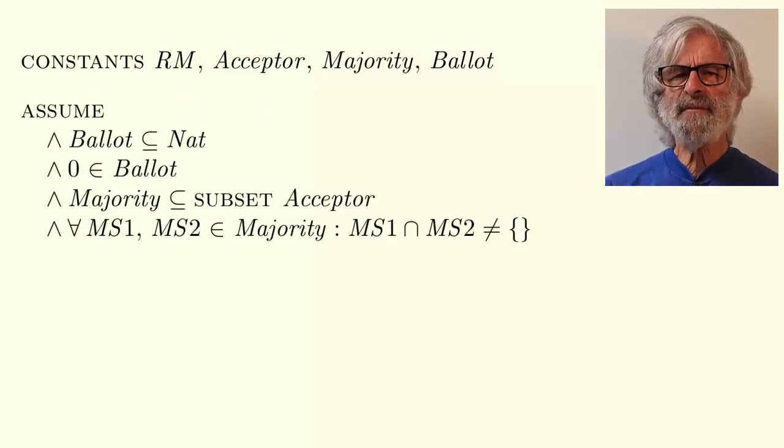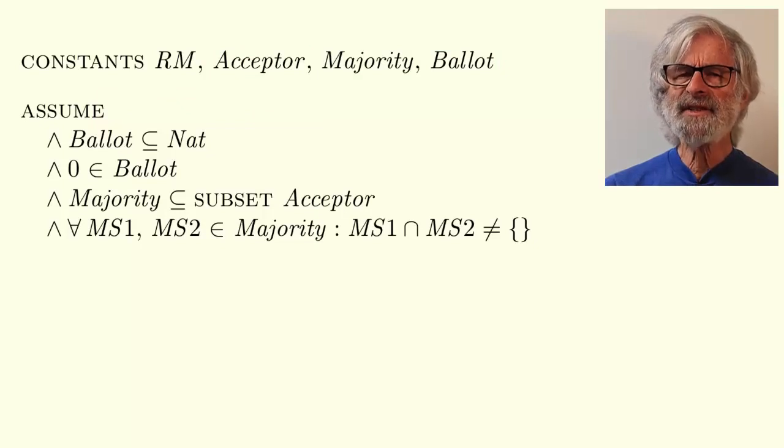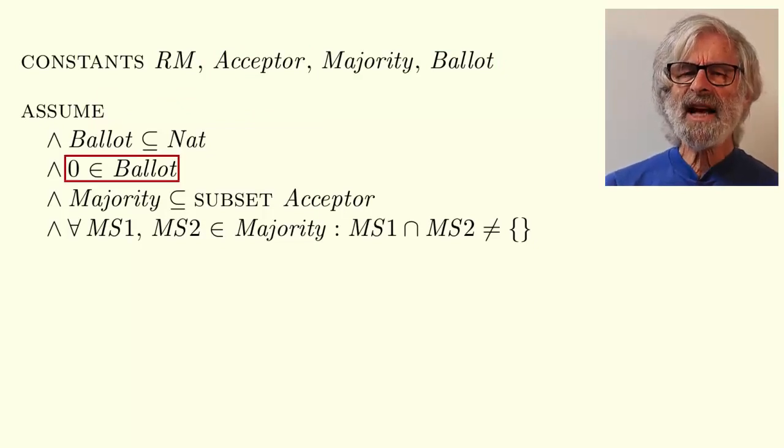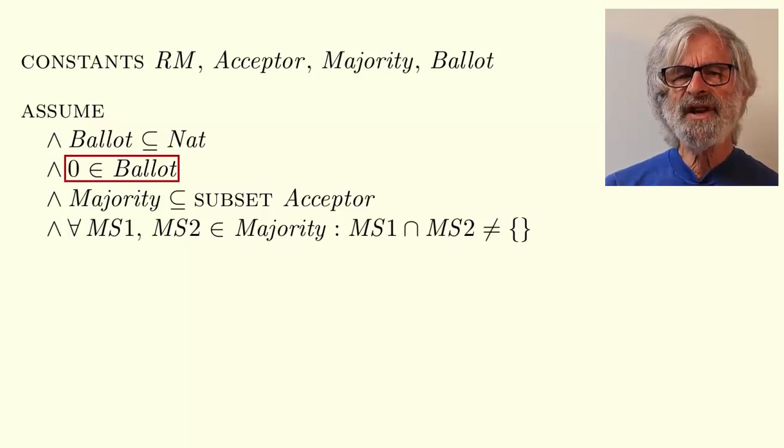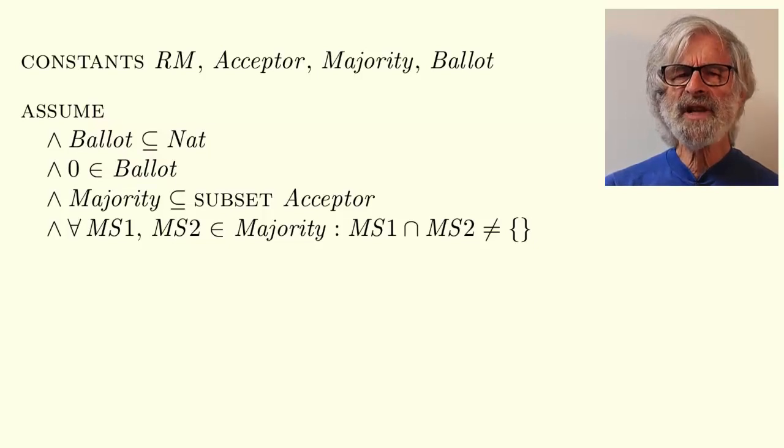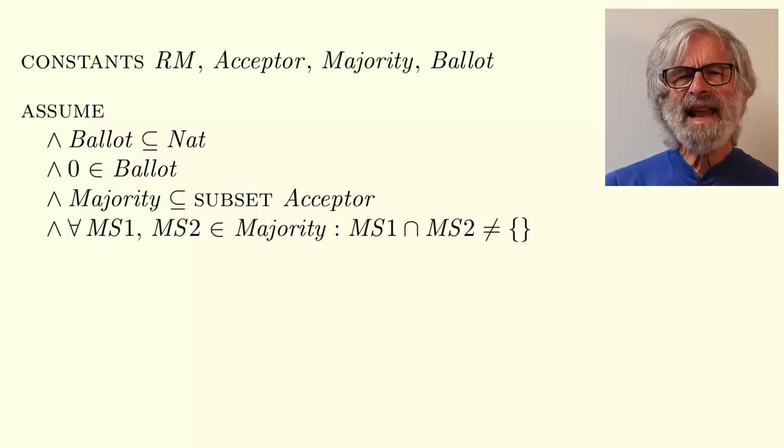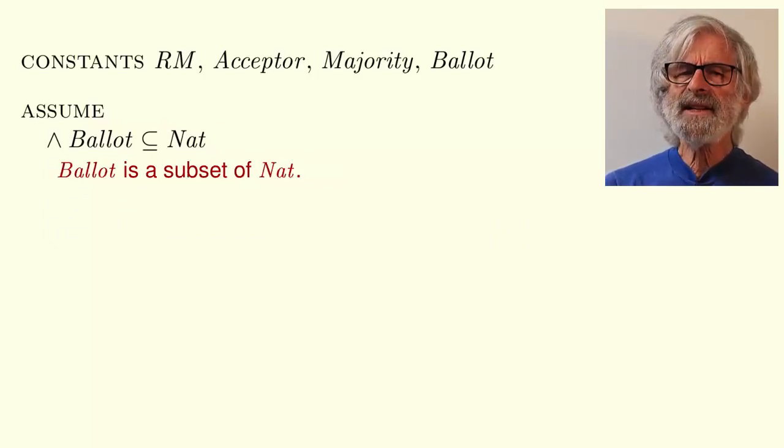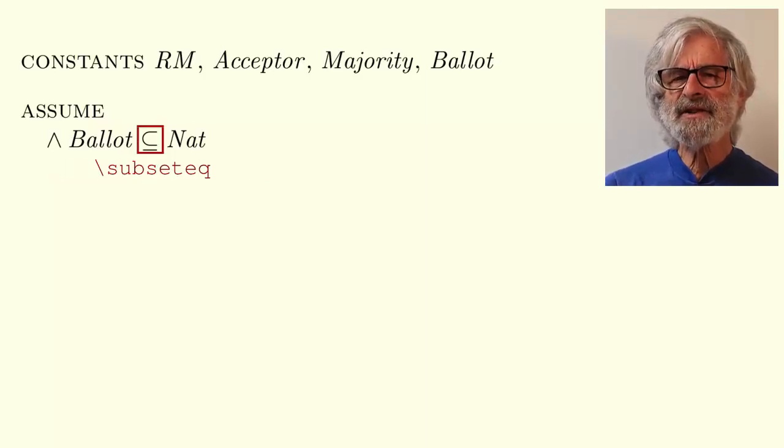The assumed statement asserts assumptions being made about the constants. For example, the second conjunct asserts the assumption that 0 is an element of the set ballot. These assumptions use some TLA+ notation that you haven't seen yet. Nat is defined in the imported integers module to be the set of natural numbers. That is, the non-negative integers. The first conjunct asserts that ballot is a subset of nat, meaning that every element of ballot is an element of the set nat of natural numbers. The subset symbol is typed backslash subset eq.